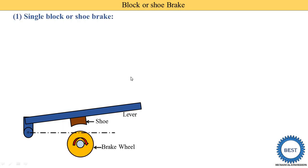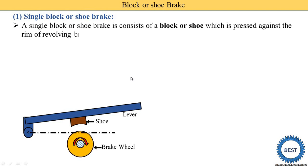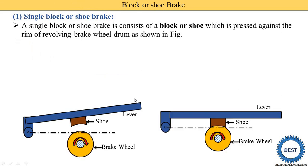A single block or shoe brake consists of a block or shoe which is pressed against the rim of a revolving brake wheel drum. As shown in the diagram, the wheel is rotating and we need to stop it. We press the lever so the shoe comes in contact with the wheel and the wheel starts to stop. It is called single block brake because only a single shoe is used.